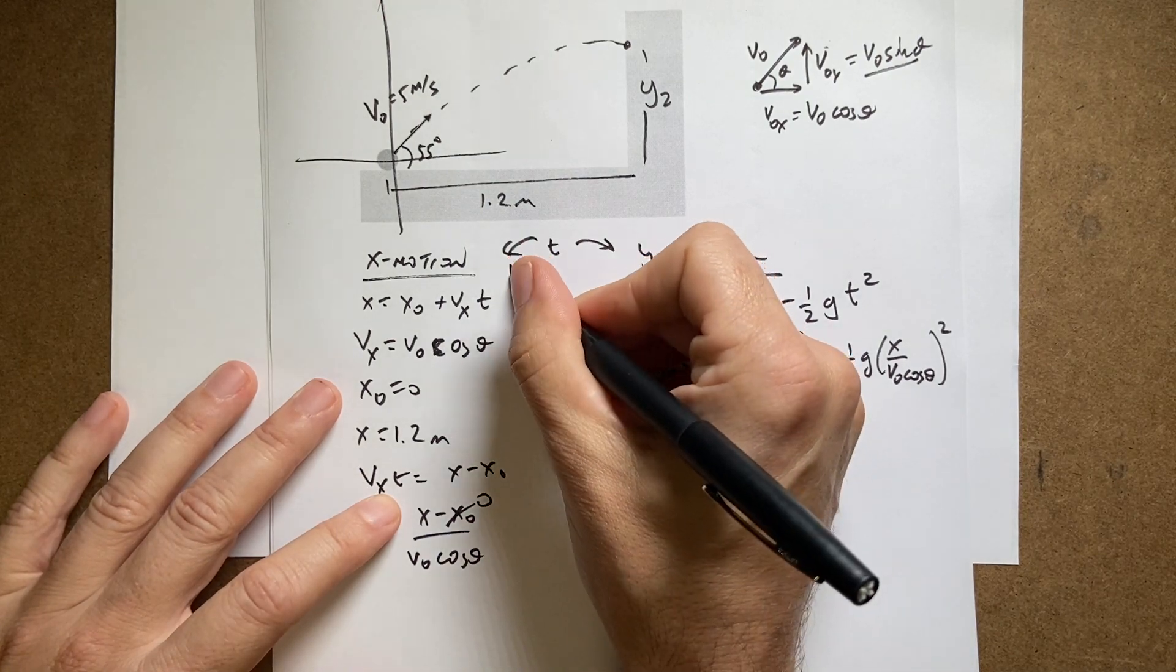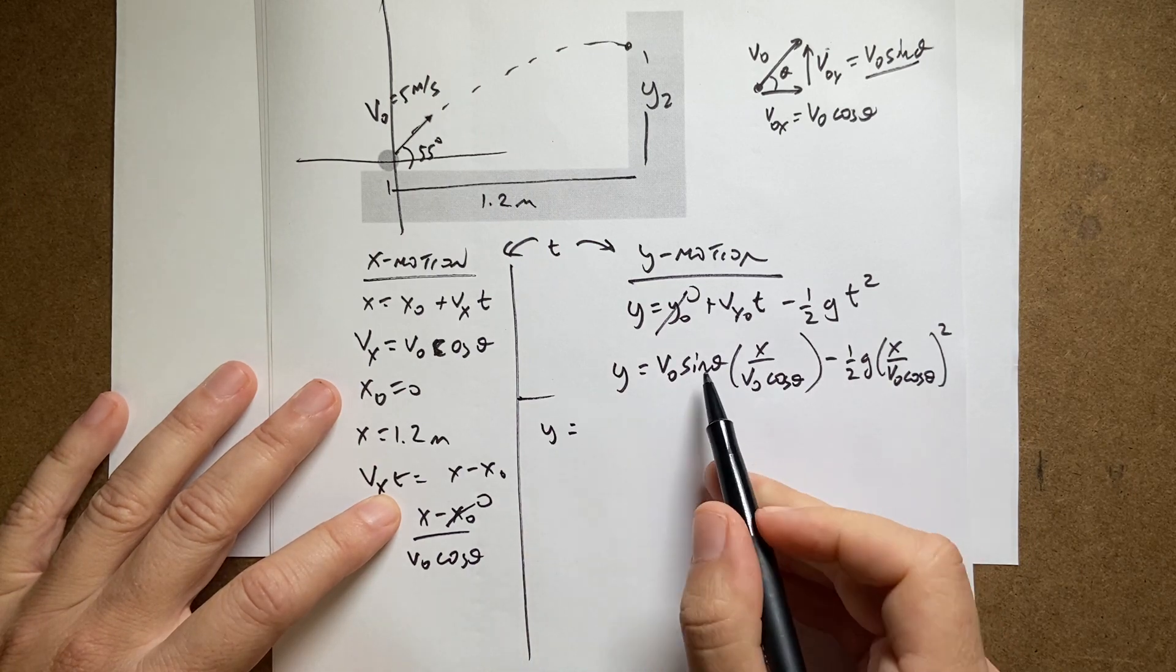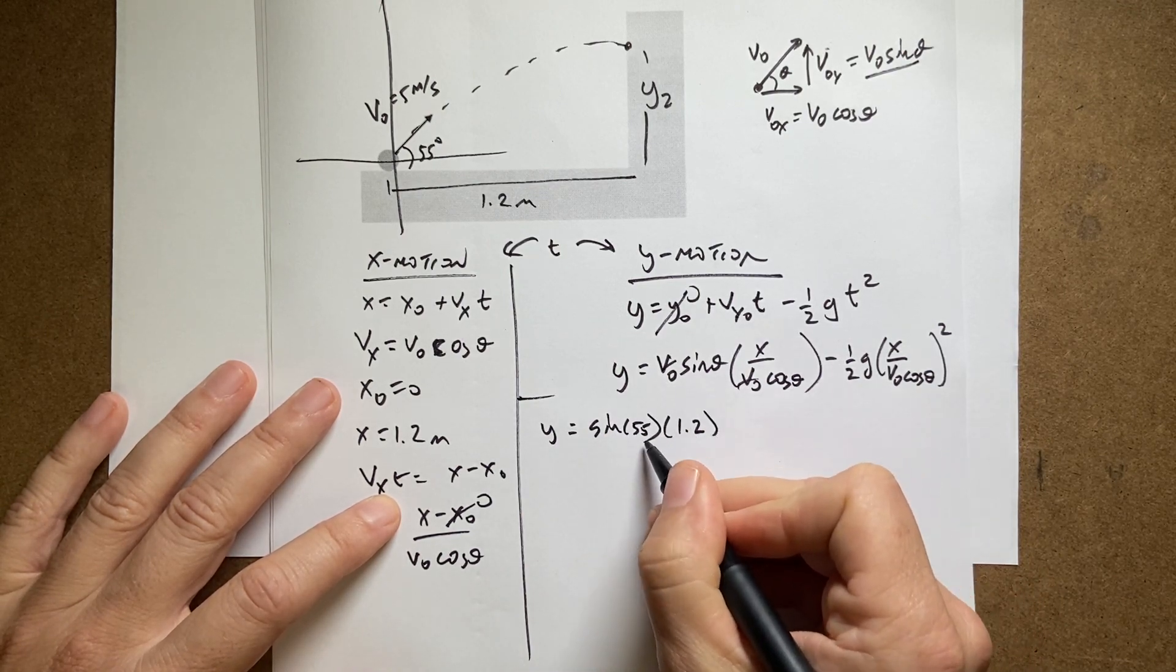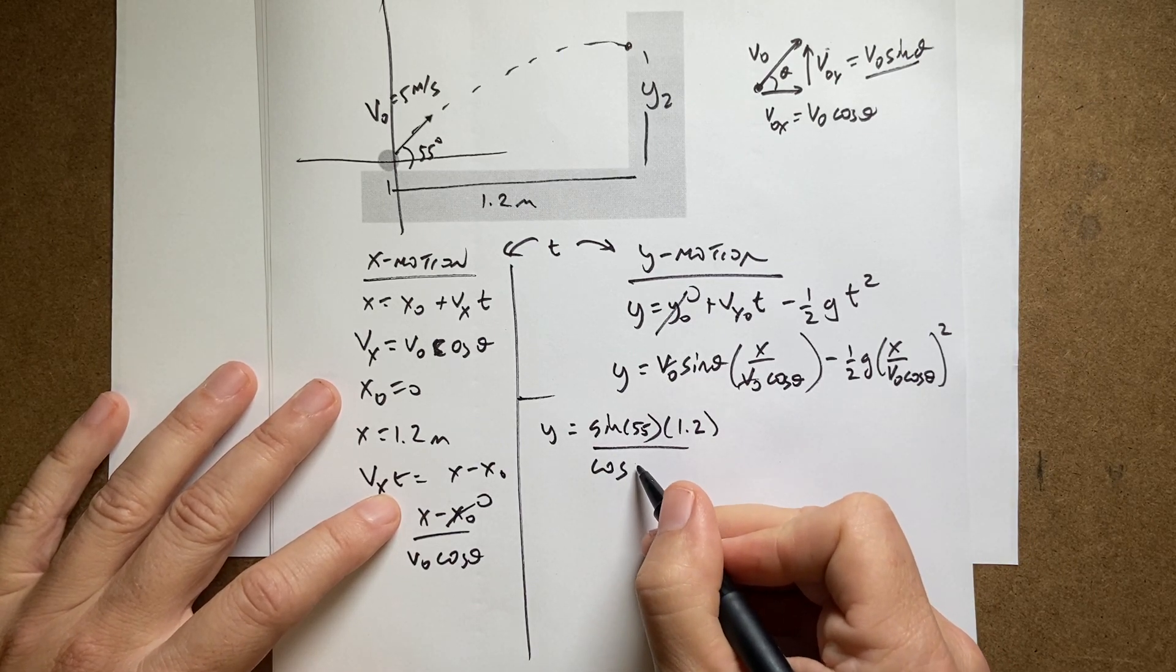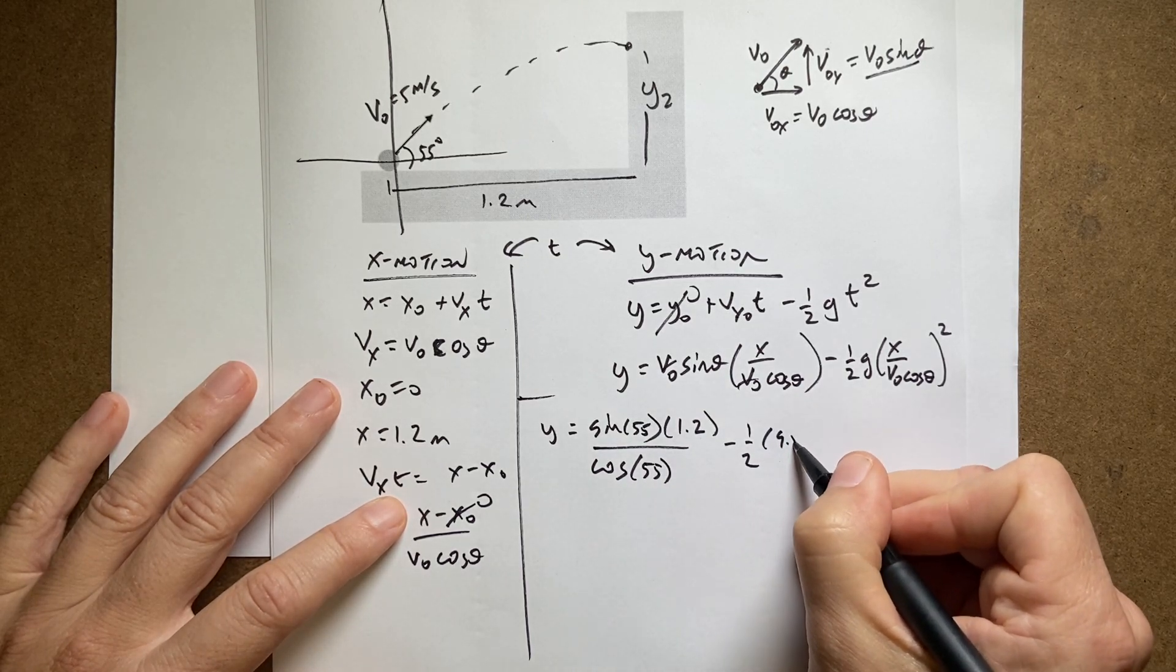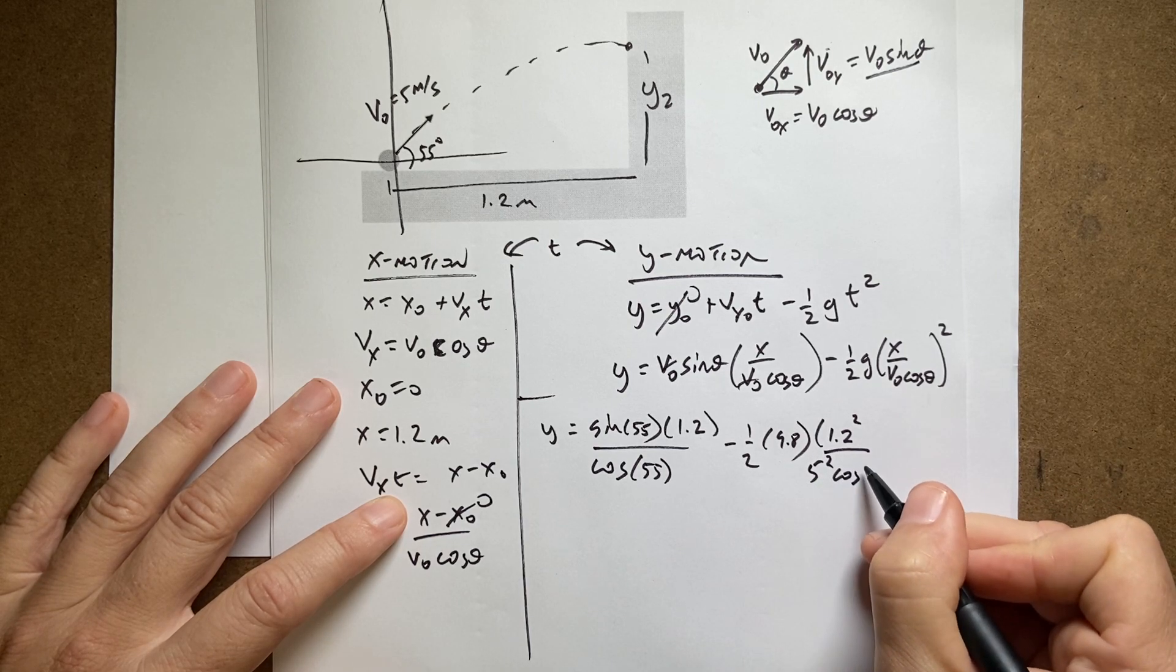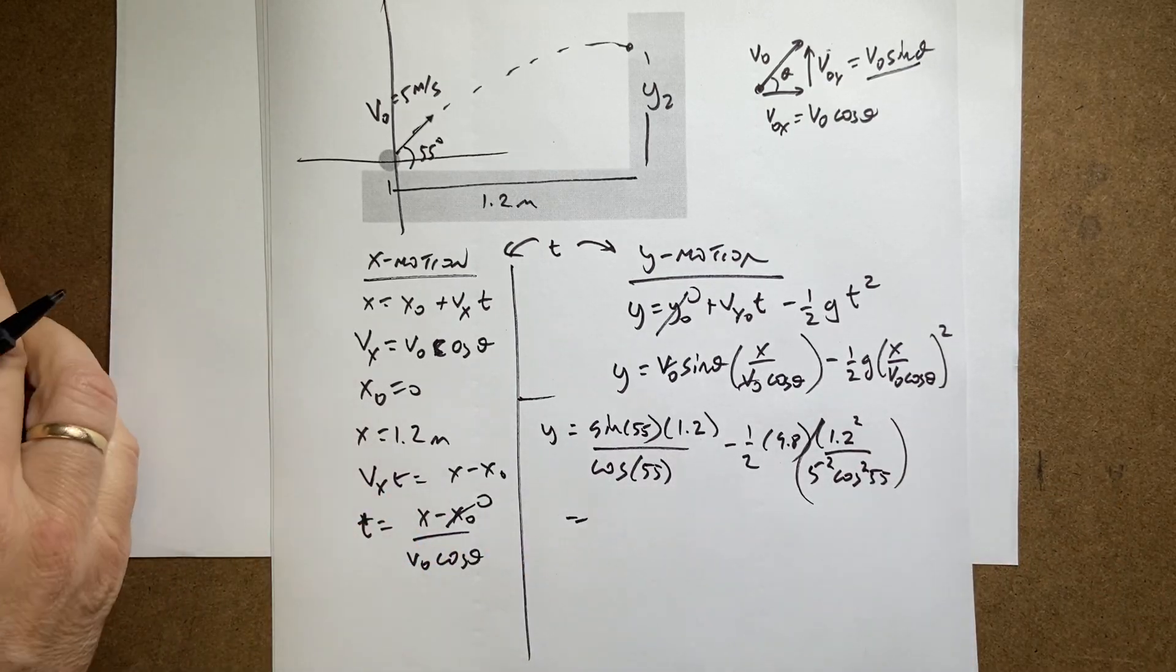So I can put in my values. So I get Y equals, right here, those V0s cancel. So I get sine of 55 times 1.2 over cosine of 55. I could have written that as tangent. I feel silly now for not doing that, but that's fine. Minus 1 half times 9.8 times 1.2 squared over 5 squared times cosine squared of 55. That's it. Let's put it in the calculator.